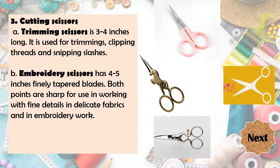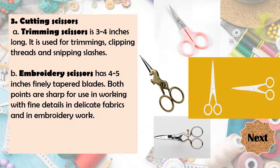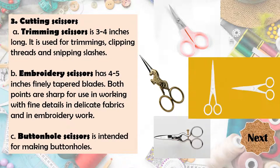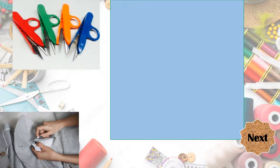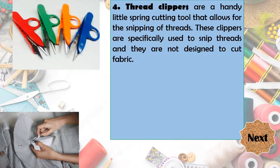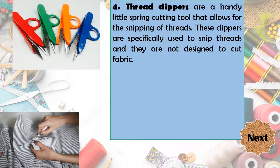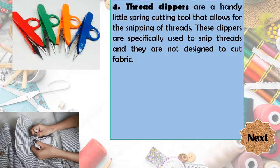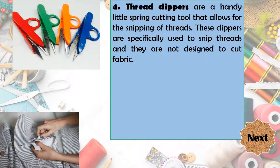Since it is used in embroidery, it has sharp points. The last cutting scissors is the buttonhole scissors, which is intended to make buttonholes. So when we cut the buttonholes, we use the buttonhole scissors. These are what we call the thread clippers — a handy little spring cutting tool that allows for the snipping of threads. These clippers are specifically used to snip threads and are not designed to cut the fabric.